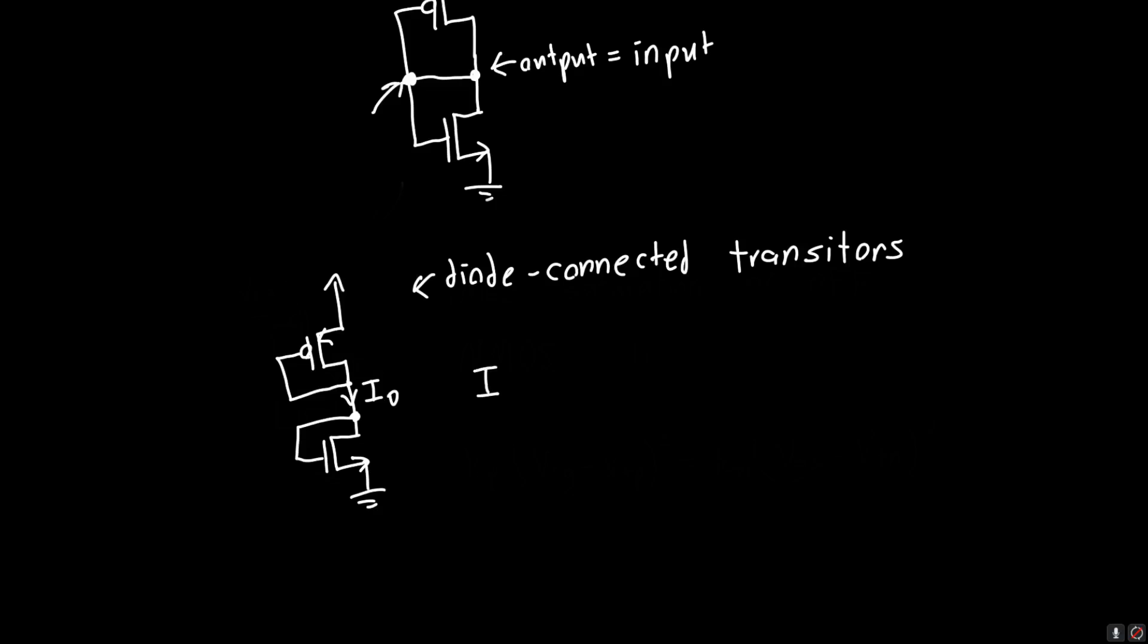And we can say that the current in the PMOS, the current IP, is just the same thing as the current flowing through the NMOS, IN. Or that KP times VSG minus VT squared is equal to KN times VGS. And in this case, VGS is this minus VT squared.